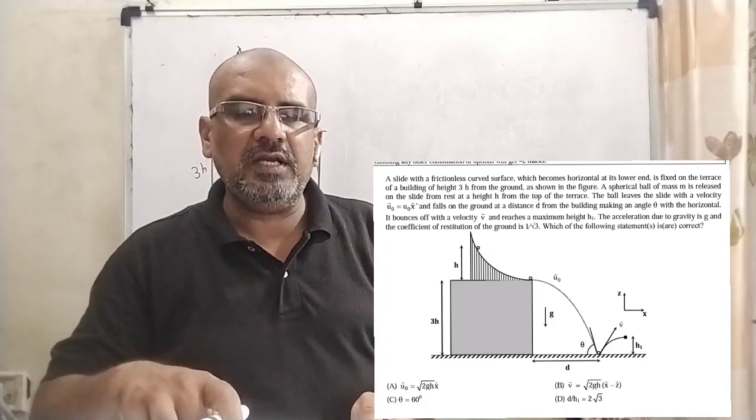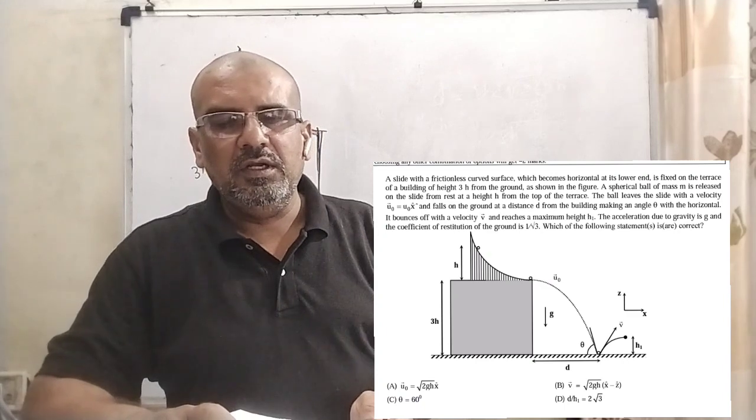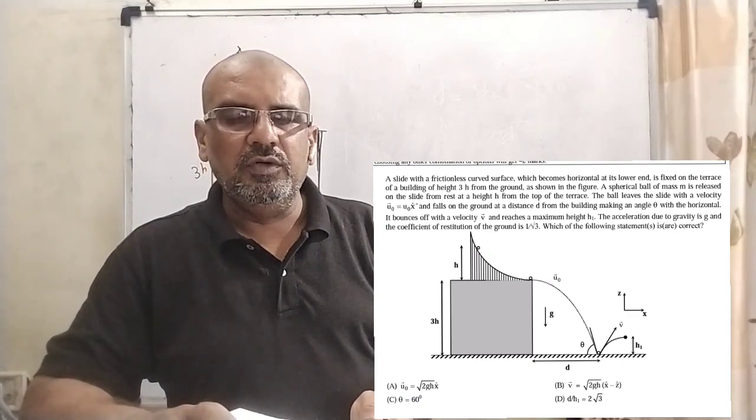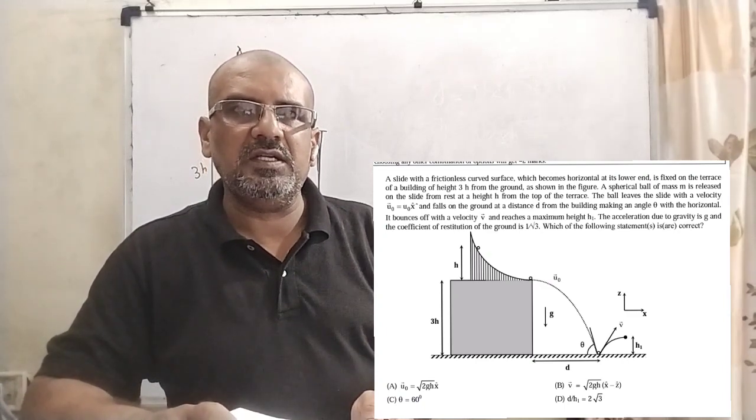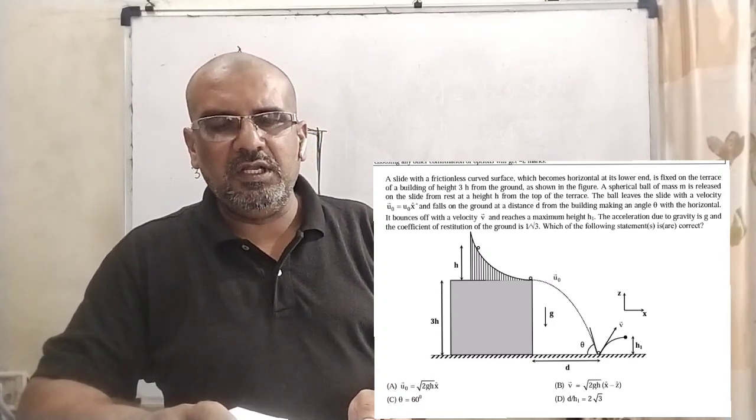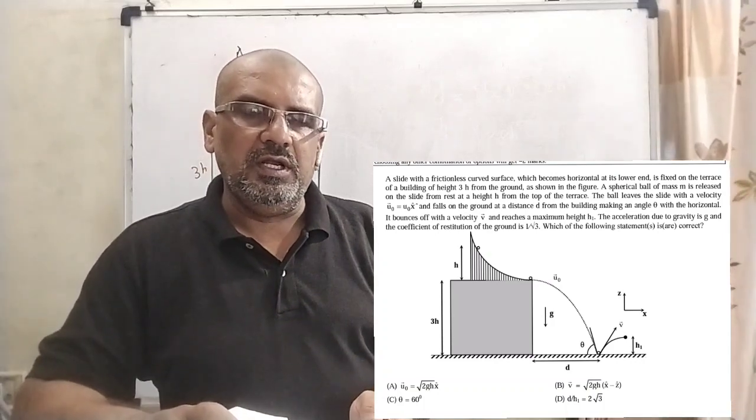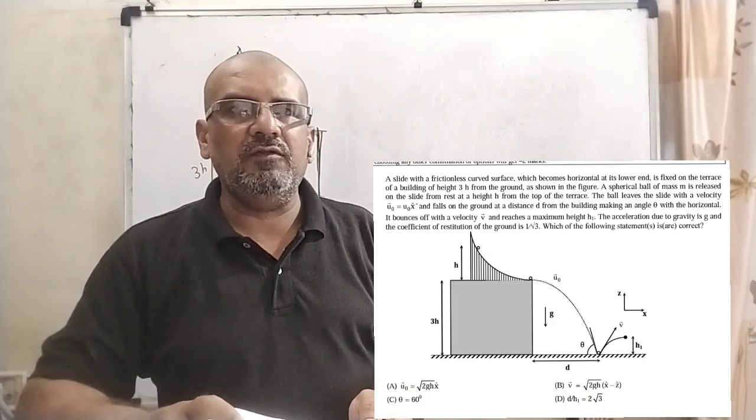Which of the following statements is correct? This is a multiple choice question. Option A: u0 vector equal to root 2gh x unit vector. Option B: v vector equal to root 2gh x vector minus z vector. Option C: theta equal to 60 degrees. Option D: d by h1 equal to 2 root 3. This question is from JEE Advanced 2023.